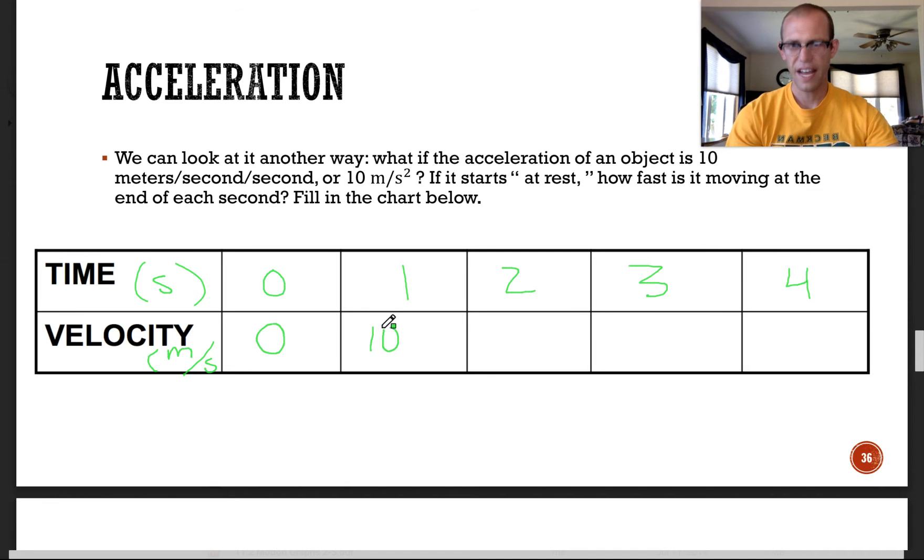The next second later, it's going to gain another 10 meters per second. Because the acceleration means for every one second, I'm going to change 10 meters per second. When you divide those, that's what this means. So another 10 meters per second is going to be added on, which would give us 20 meters per second. And then another second later, your velocity is going to change by another 10 and another 10. So every second that goes by, you're adding 10 meters per second to the velocity.